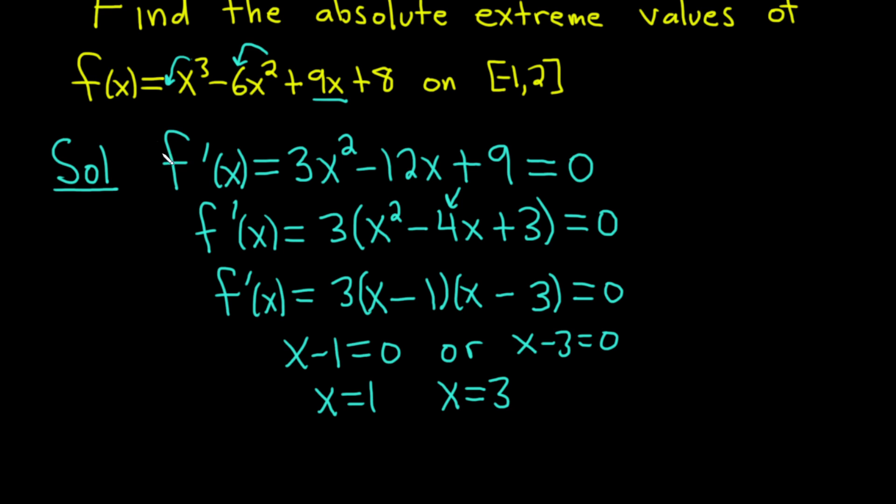Now these are the critical numbers of this function. Critical numbers are numbers in the domain where the derivative is 0 or undefined. However, in this problem, we're restricting the domain to [-1, 2]. So 3 is not something we will consider because 3 is not in this interval.